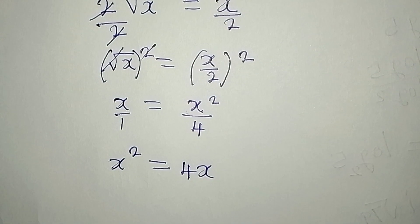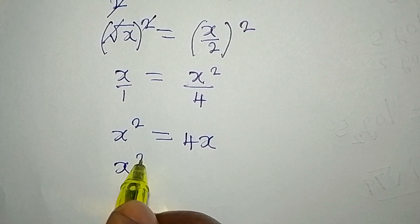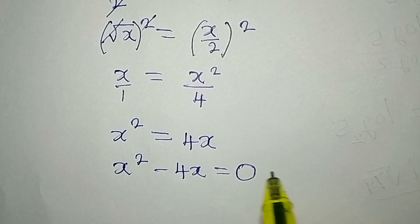Now we have a quadratic equation. Bringing this to the left, we have x squared minus 4x, and is equal to 0.